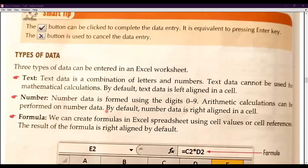Now we will understand types of data. There are several kinds of data used while entering data in Excel. The first and most basic type is text. Text data is a combination of letters and numbers, but it is considered as text only — you cannot perform mathematical operations on it. If you want to do calculations, you must use the number data type. Text data cannot be used for mathematical calculations. By default, text data is left-aligned in a cell.